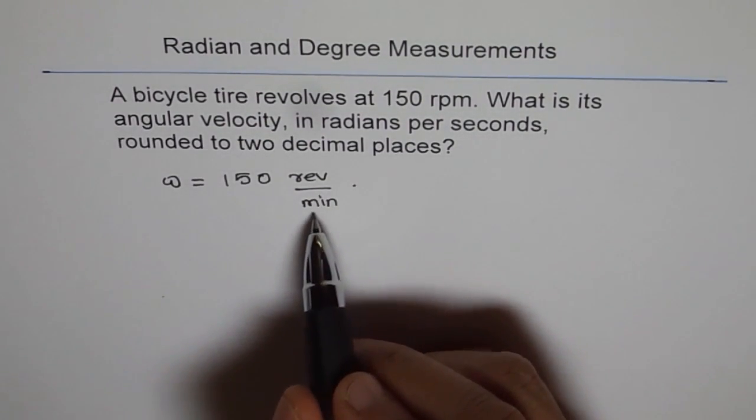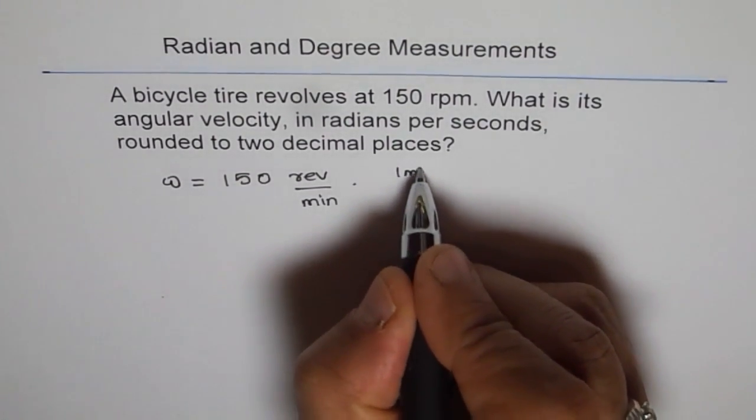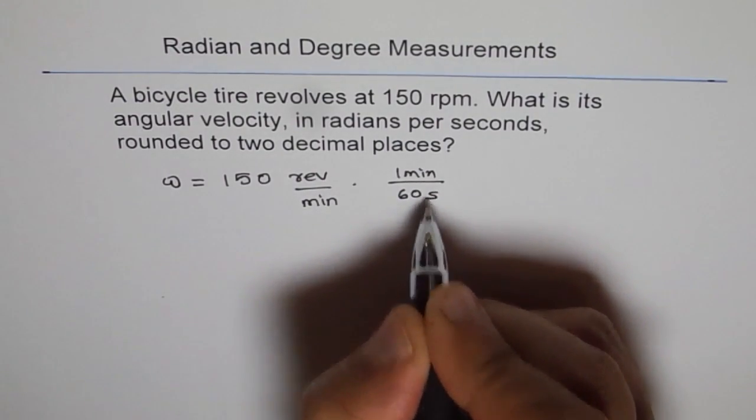So what we do is we need seconds. So one minute has how many seconds? We say one minute has 60 seconds. So we write 60 seconds here.